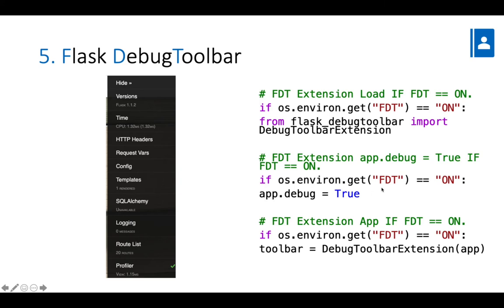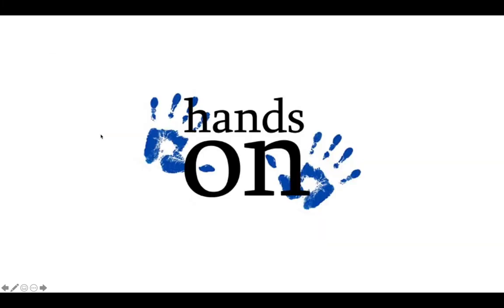I will also set app.debug to True and instantiate the debug toolbar extension. This is the code I use for that, so let's have a look at what that means.